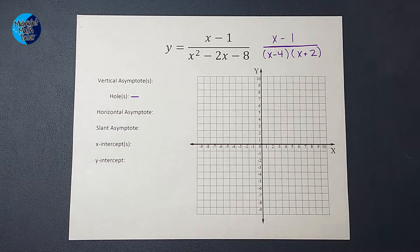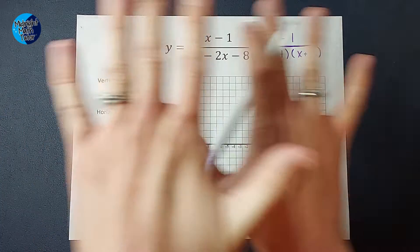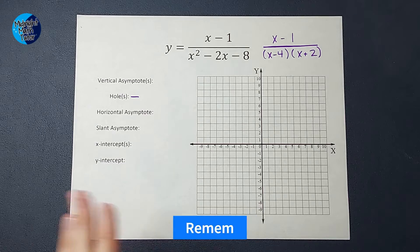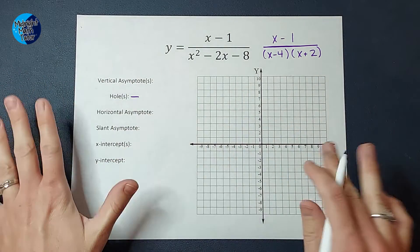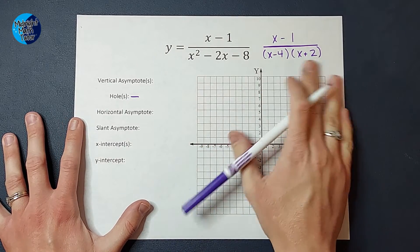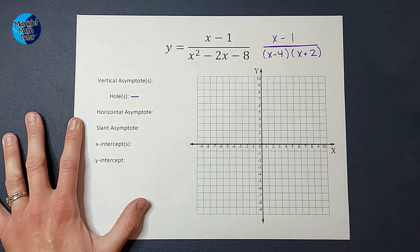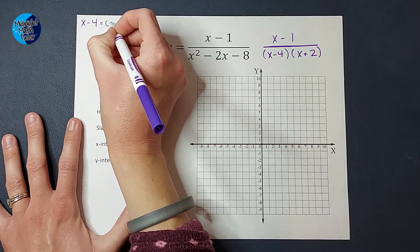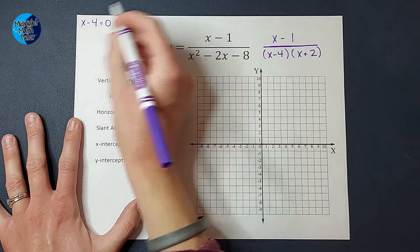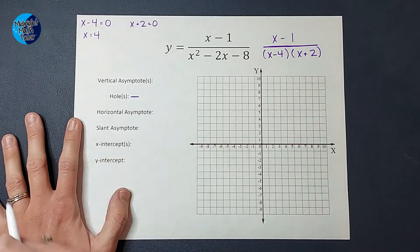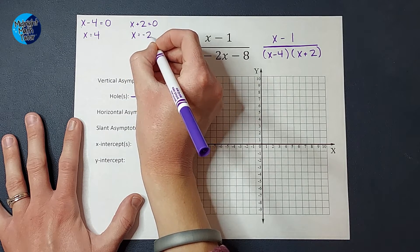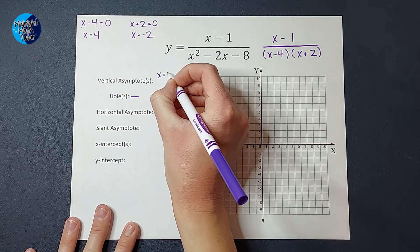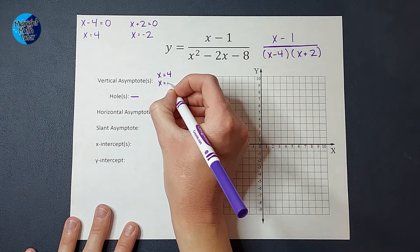My vertical asymptotes have to do with zeros. If you've been doing math for any amount of time, you probably remember that we do not mess with zeros in denominators. Vertical asymptotes are formed where the denominator could be equal to zero. So I'm going to set each factor equal to zero: x minus 4 equals zero gives x equals 4, and x plus 2 equals zero gives x equals negative 2. So I happen to have two vertical asymptotes: x equals 4 and x equals negative 2.